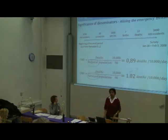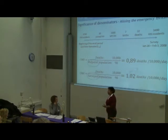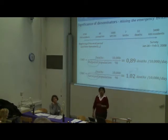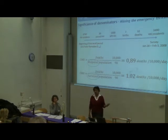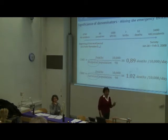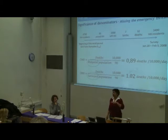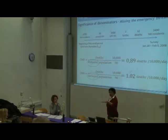The next issue is the significance of denominators. We don't want to belabor the point — everyone knows the significance of denominators — but since we have started with the SPHERE guideline of 1 per 10,000 per day, there are both advantages and disadvantages to having that structure.